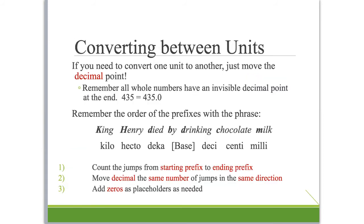You need to know how to convert between units. If you need to convert from one unit to another when they have the same base, you just move the decimal point. It's important to remember that whole numbers all have an invisible decimal point at the end. So 435 can also be written as 435.0.